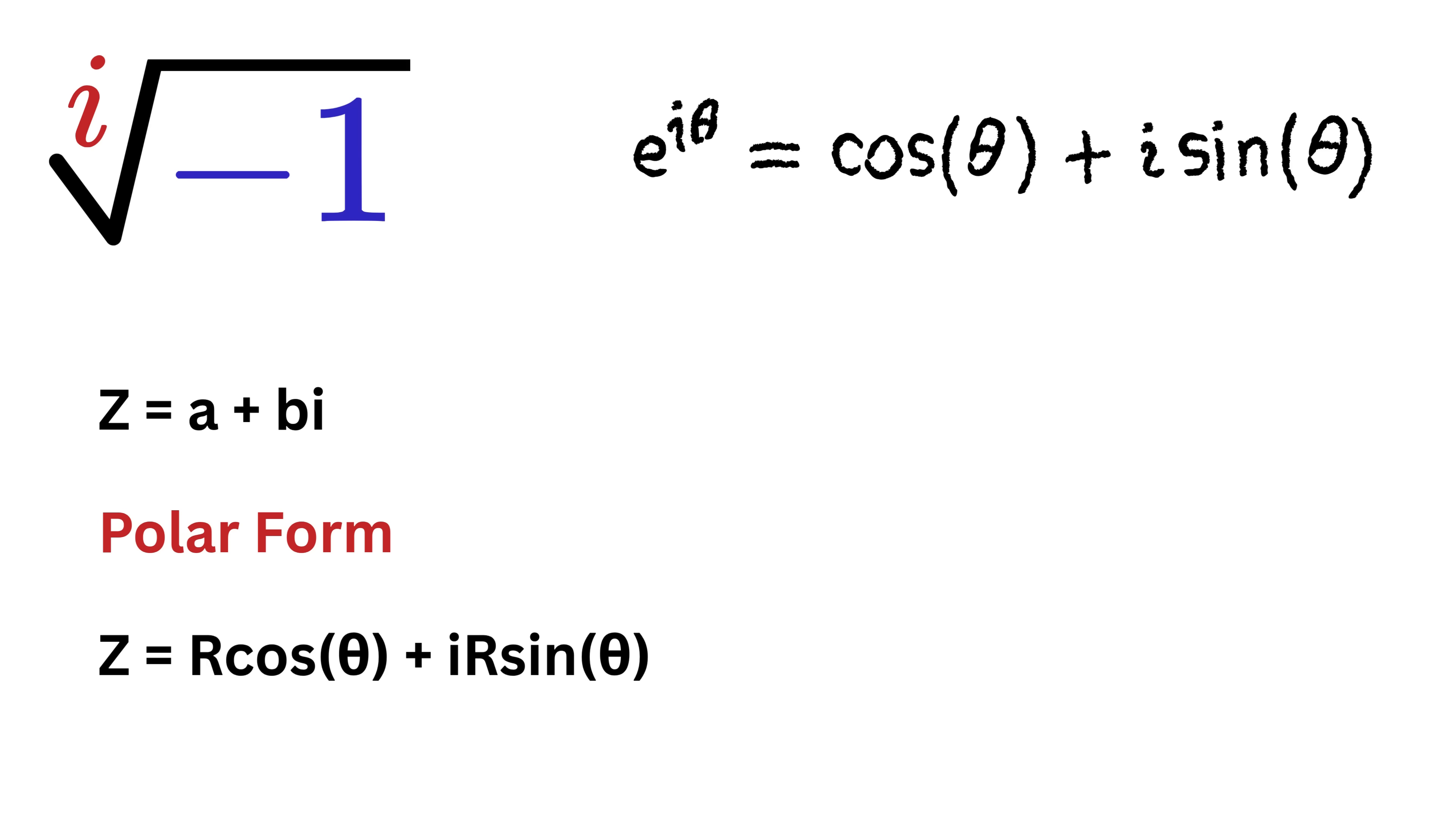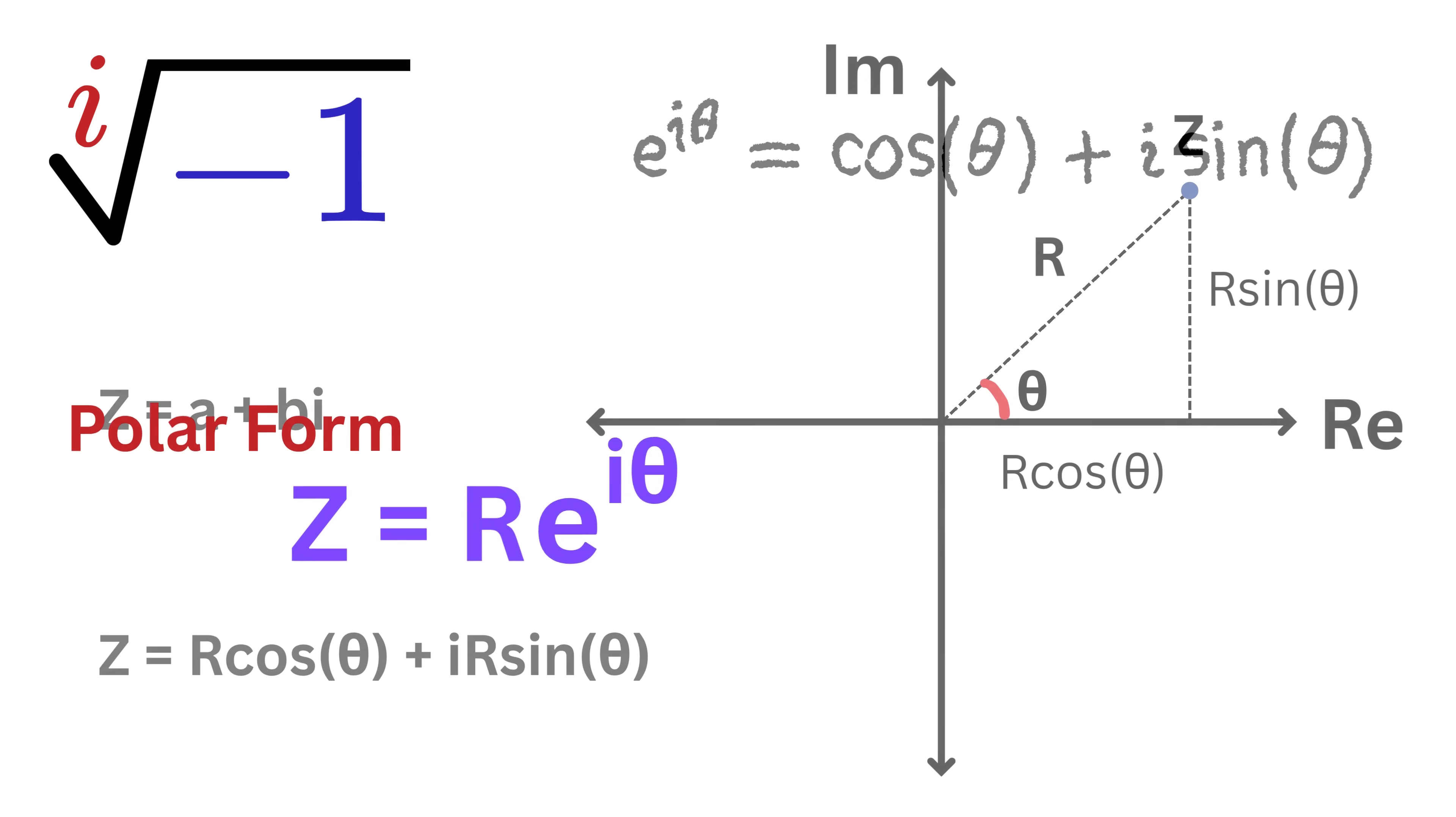So, in polar form, z can be written as r times e raised to the power of i theta.